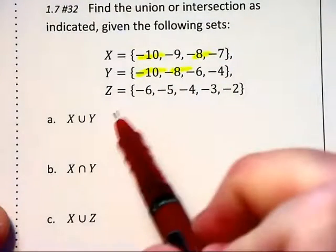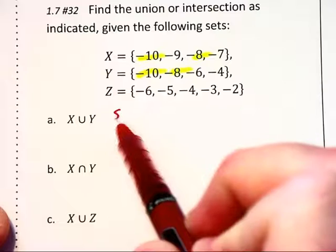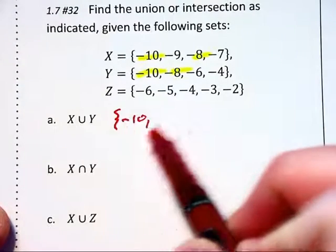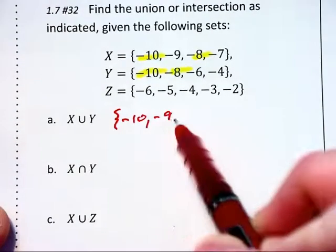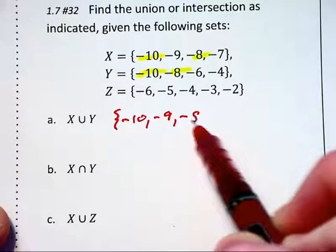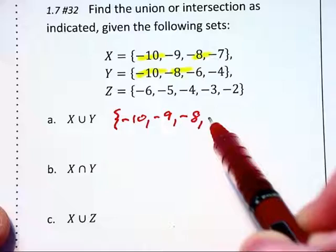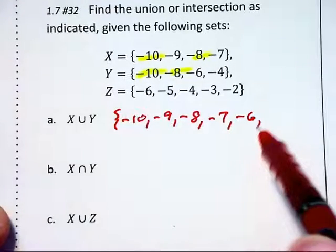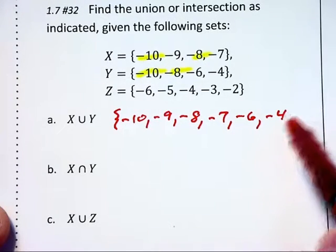So the union of X and Y is going to be the set: negative ten, negative nine, negative eight, negative seven, negative six, and negative four.